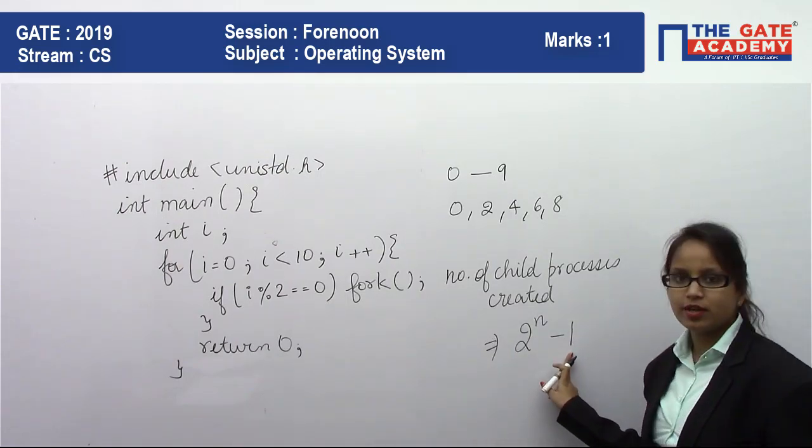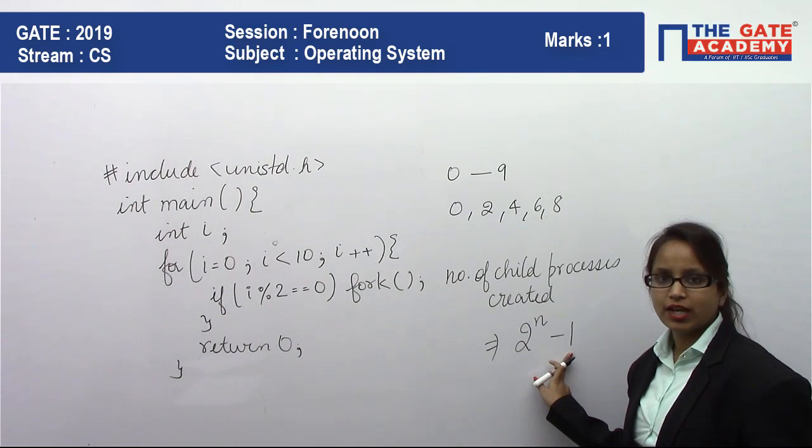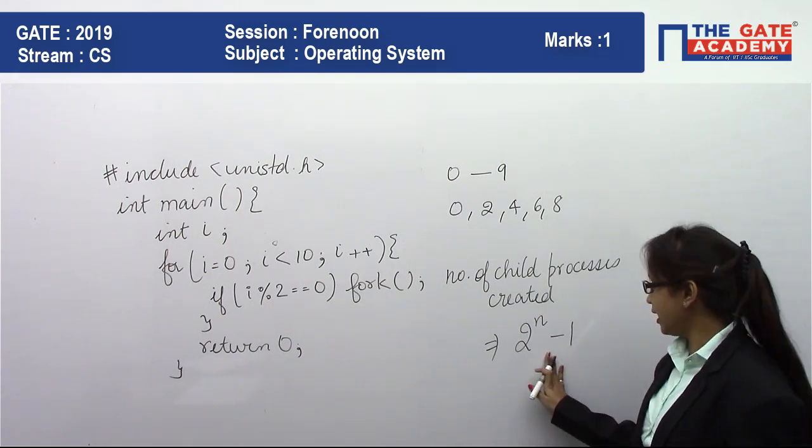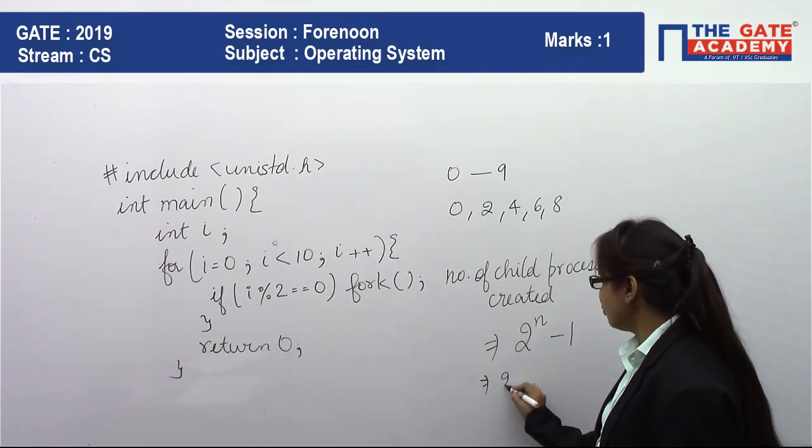This minus 1 is representing that there will be a parent - the child needs a parent, so the original parent should be eliminated here. That's why it is minus 1. So it is nothing but 2^5 - 1.